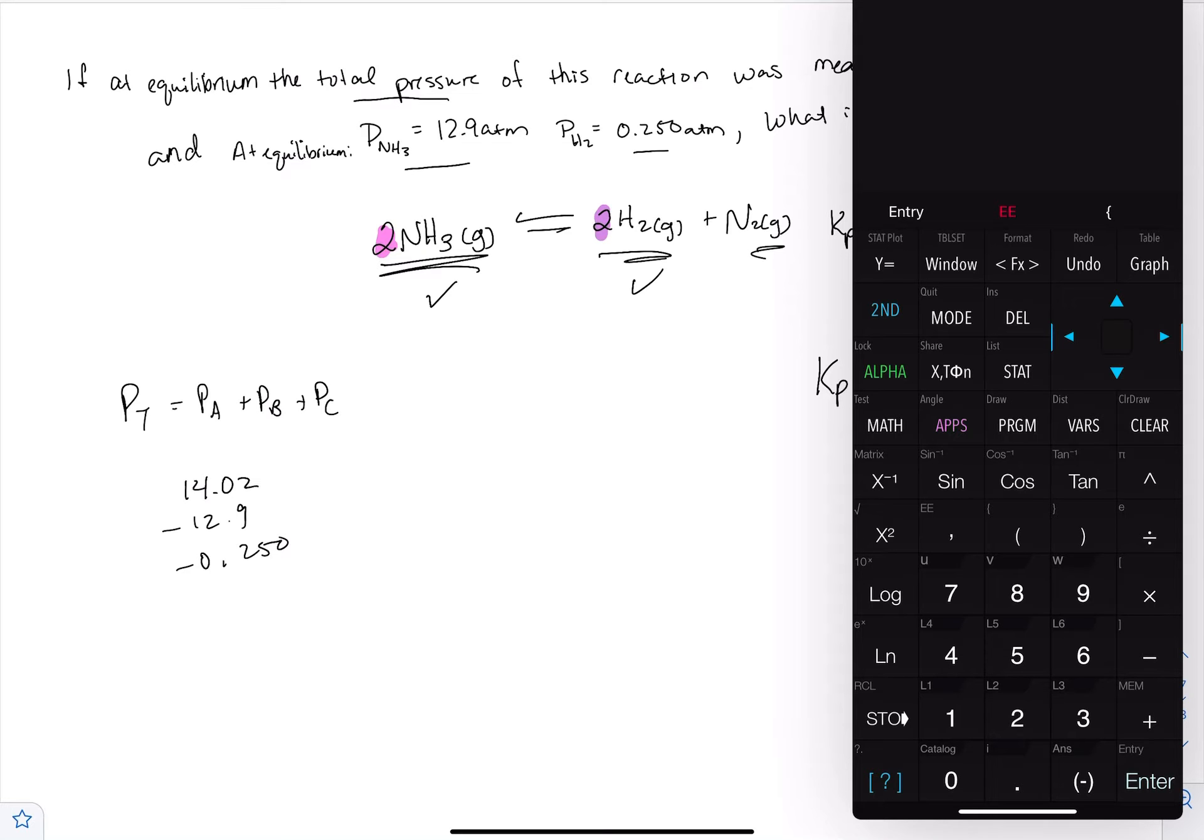14.02 minus 12.9 minus 0.250. It tells us that pressure is 0.87.